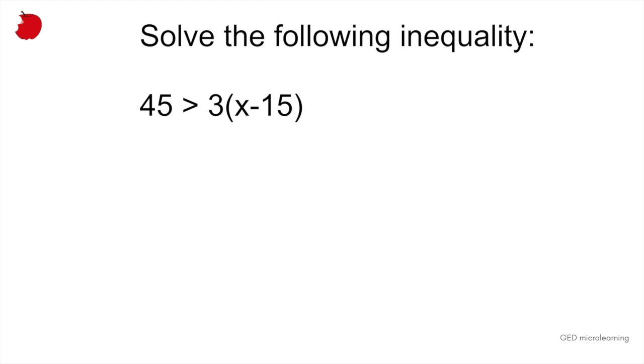It's just kind of there to intimidate people, but it doesn't mean anything. Alright, so pretend it says 45 is equal to 3 multiplied by x minus 15. Alright, second thing you're going to do is you're going to do the right side of your equation.